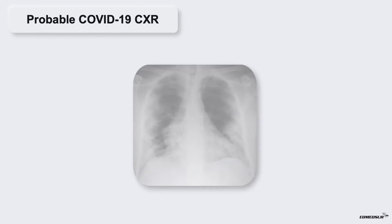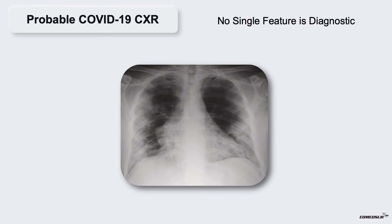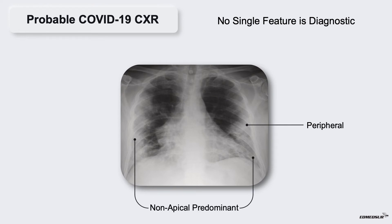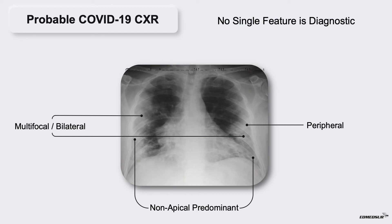Probable COVID-19 CXR. No single feature of COVID-19 pneumonia on chest radiograph is specific or diagnostic. If the CXR shows peripheral, non-apical predominant, multifocal and bilateral areas of ground glass opacities with or without areas of consolidation, these are considered as classical findings of COVID-19 pneumonia.